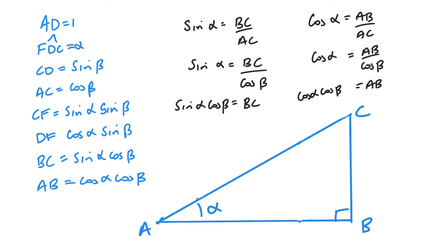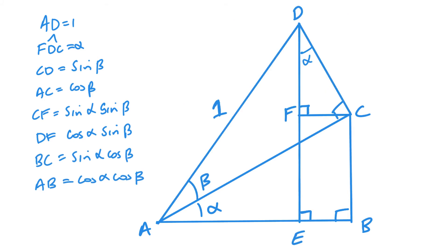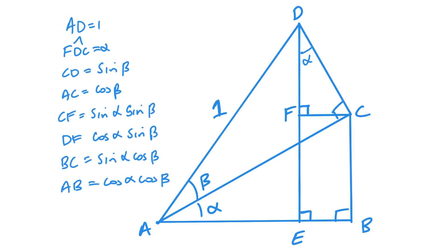Now that we have these four sides with these four terms, there are a few additional bits we need to look at. We found the length BC, and BC is the same size as EF. Also, CF — which is sine alpha sine beta — is the same as EB. So I want to add those in.